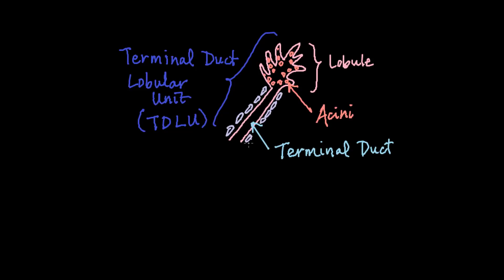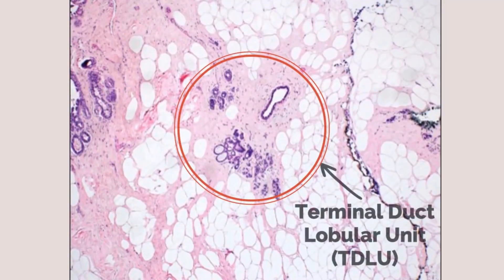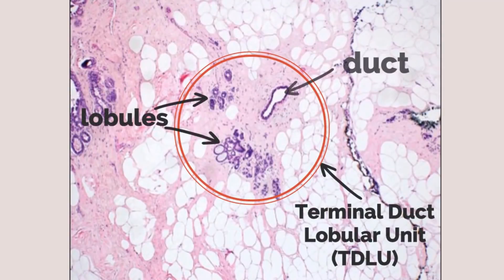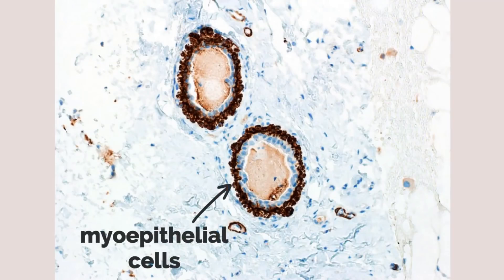The ducts are surrounded by myoepithelial cells to allow for milk ejection. In the histology image, you can see a TDLU with both lobules and a duct. On higher power with a special stain, myoepithelial cells are brown and surround the inner ring of ductal cells.